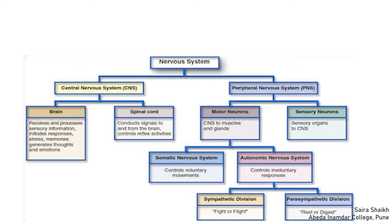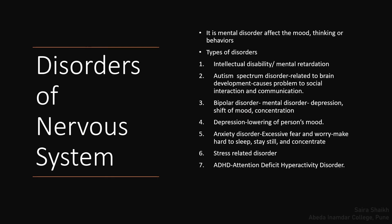To summarize, the human nervous system is broadly classified into the central nervous system (brain and spinal cord) and the peripheral nervous system (motor neuron division and sensory neuron division). Now let us study the disorders related to the human nervous system: mental disability, mental retardation, bipolar disorder, depression, anxiety, and stress — all of which affect the mood, thinking, and behavior of a human being, as well as interaction and communication.